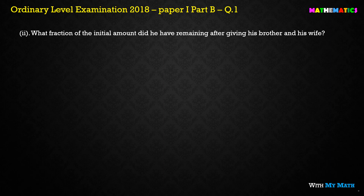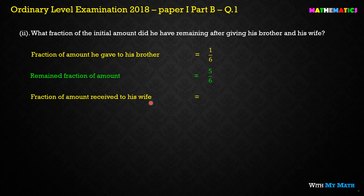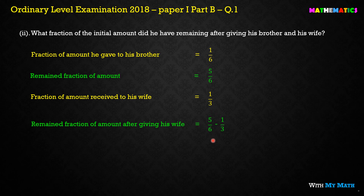Now let's move to the second question: what fraction of the initial amount did he have remaining after giving to his brother and his wife? The fraction given to his brother is 1/6. The fraction given to his wife was 1/3. The remaining fraction after giving to his brother is 5/6, and the fraction given to his wife is 1/3. We calculate: 5/6 minus 1/3.